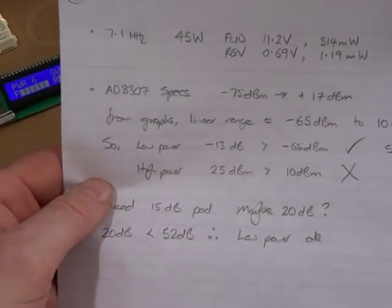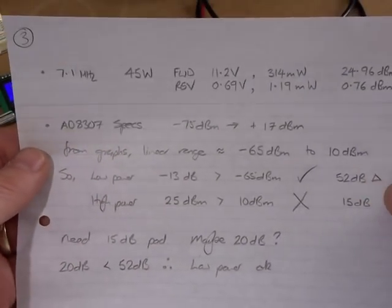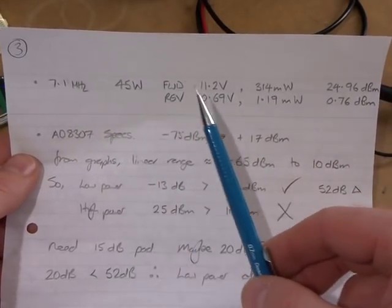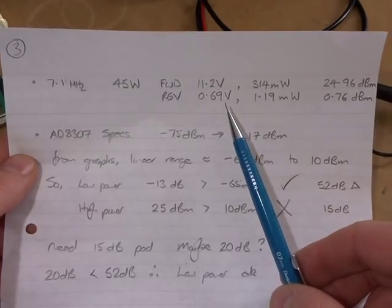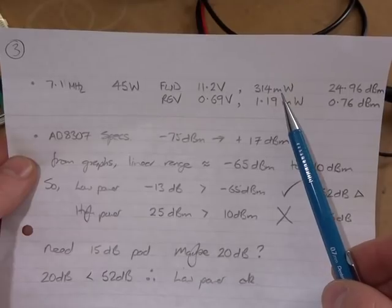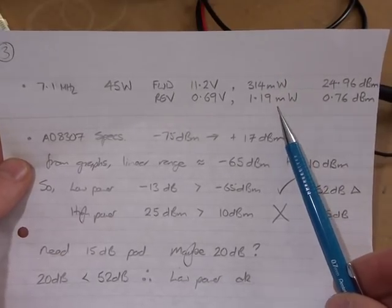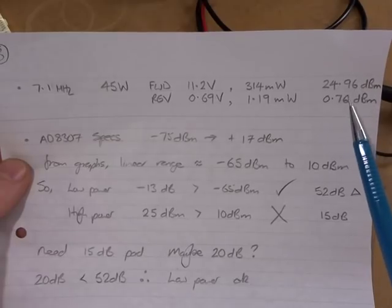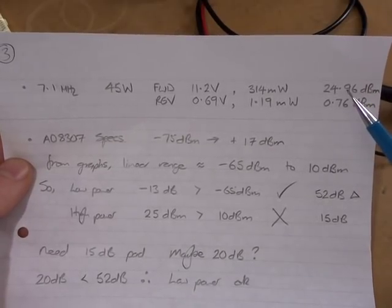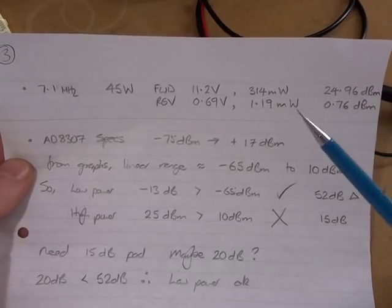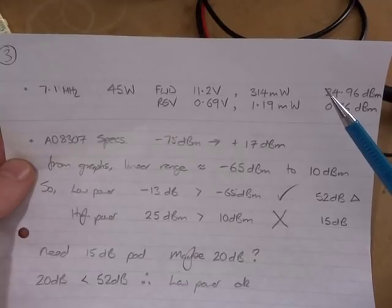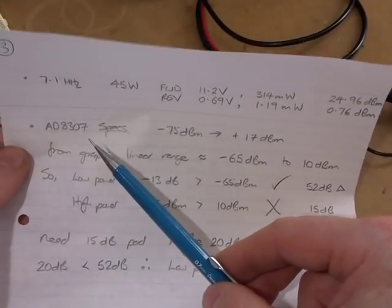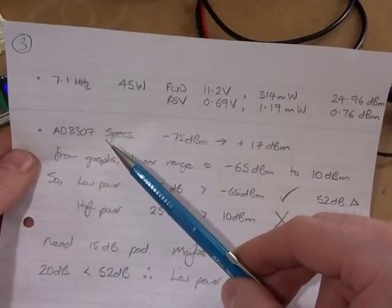In a similar fashion, I decided to crank up that particular radio as far as I could go, and that was the equivalent of 45 watts into that dummy load, which gave me a forward voltage 11.2 and a reverse voltage of 0.69. That comes out to be the equivalent of 314 milliwatts or 190 milliwatts off the 50 ohm load, and then conversely, referenced to one milliwatt, approximately 25 dBm and 0.76 dBm. I did those two values, the minimum and the maximum - the minimum is acknowledged higher than the 100 milliwatts - but I wanted to see what that meant in regards to the limits of the AD8307.